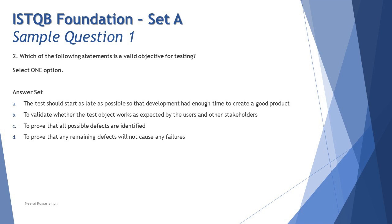Let's take the second question from the same sample paper, Set A, Chapter 1: which of the following statements is valid about the objective of testing? We should recall the bullet points from Chapter 1 where we spoke about objectives of testing — finding defects, providing necessary information for decision making, preventing defects, and many other things. Start listing what you remember, relate it, and then look at the options.